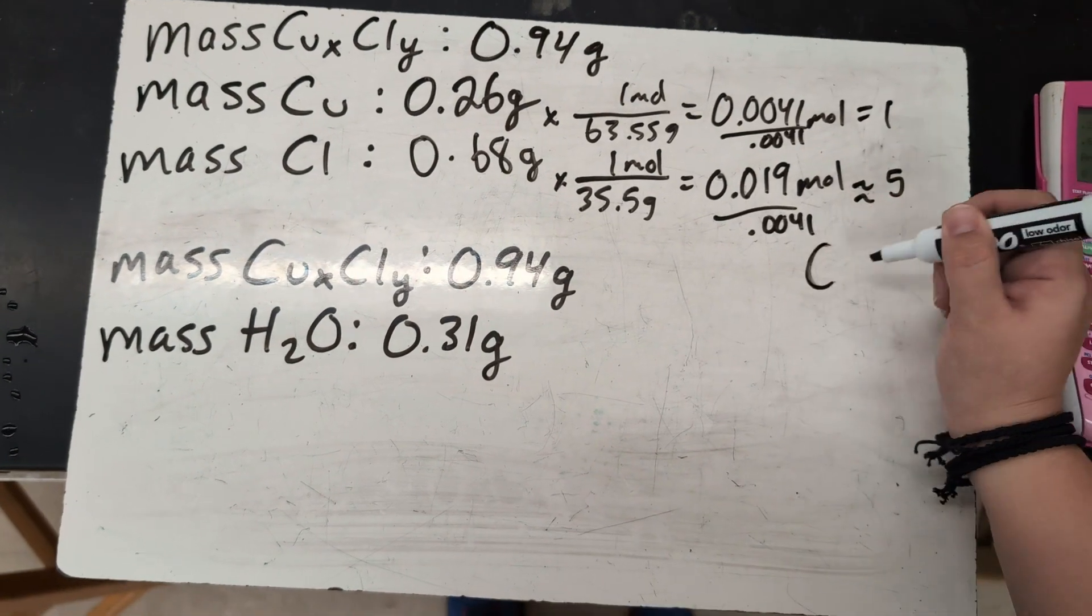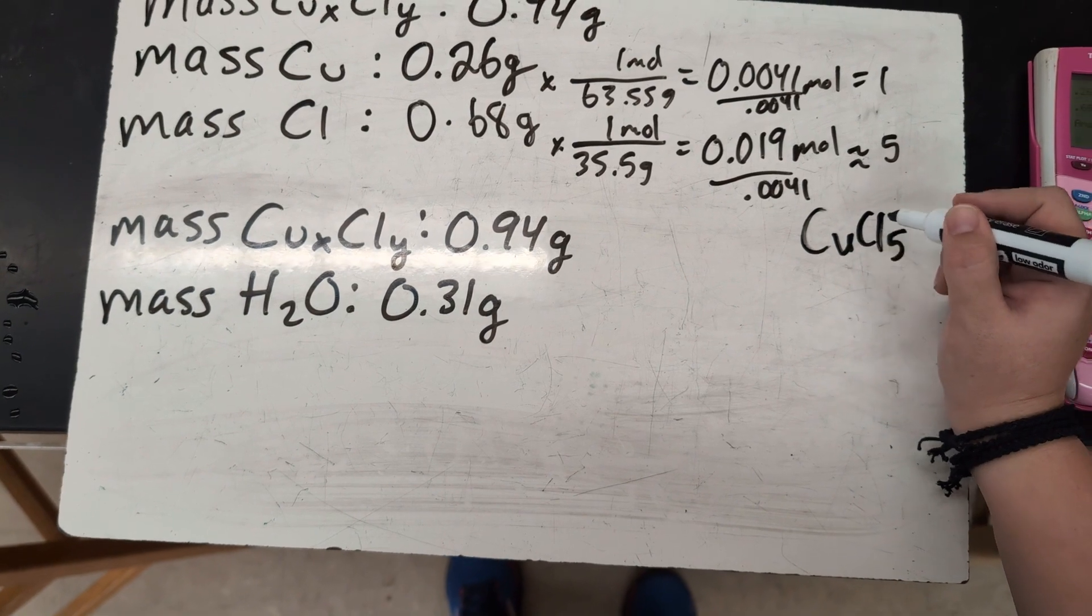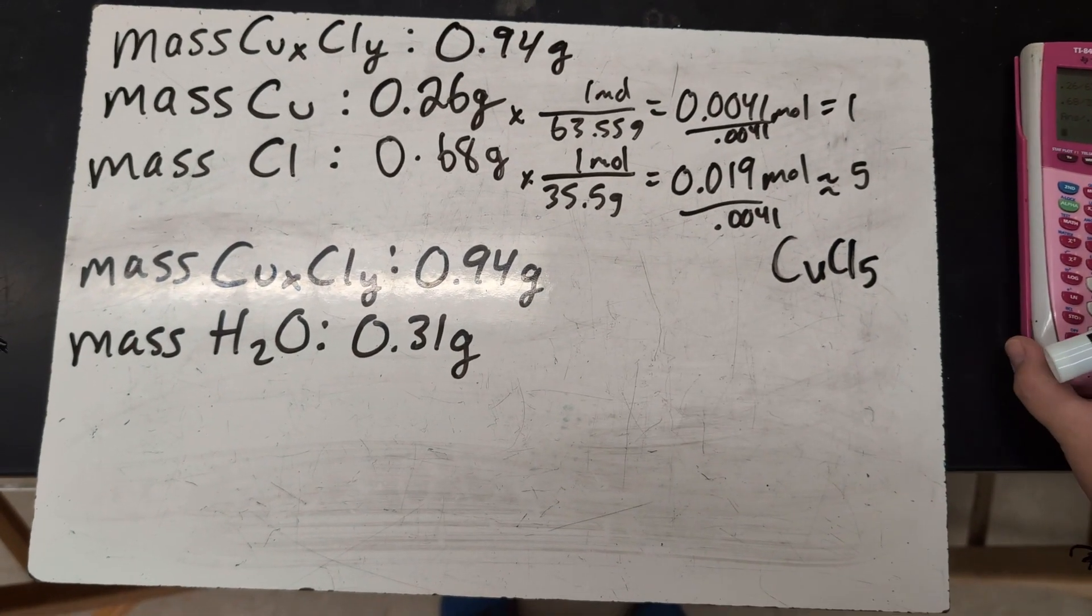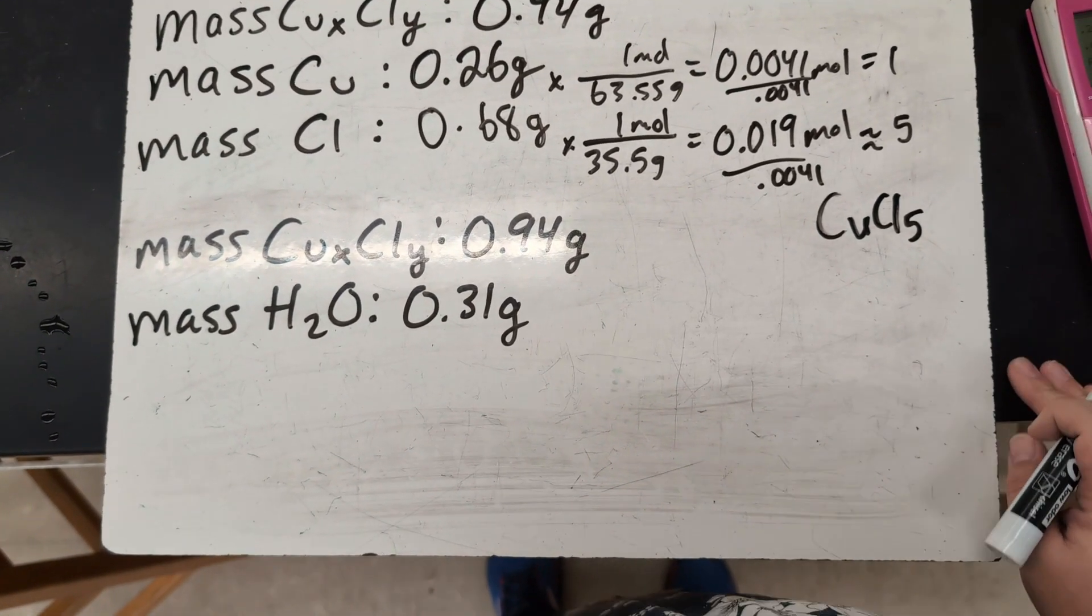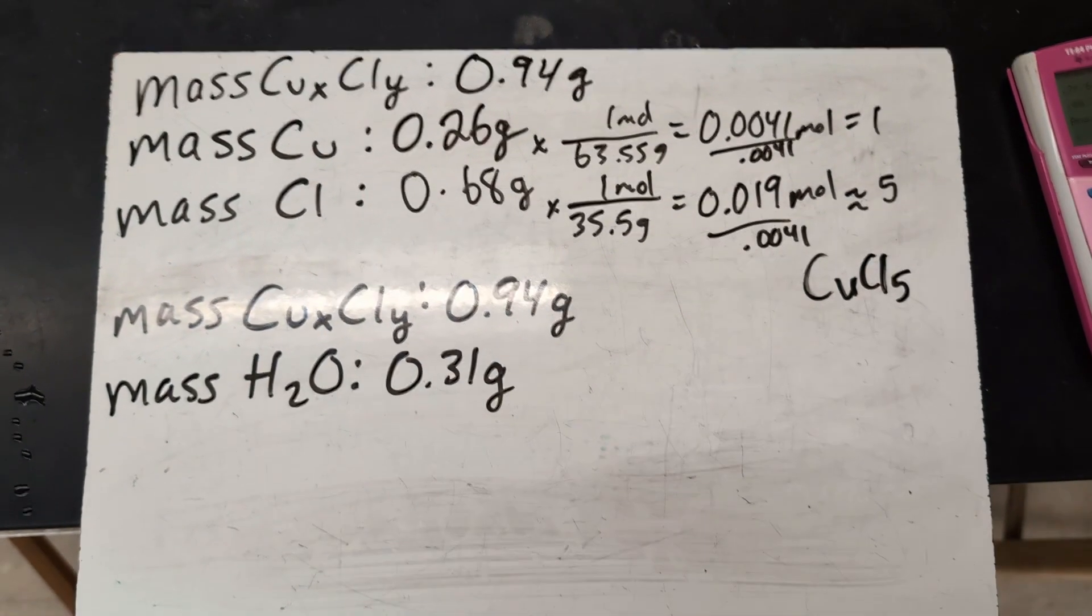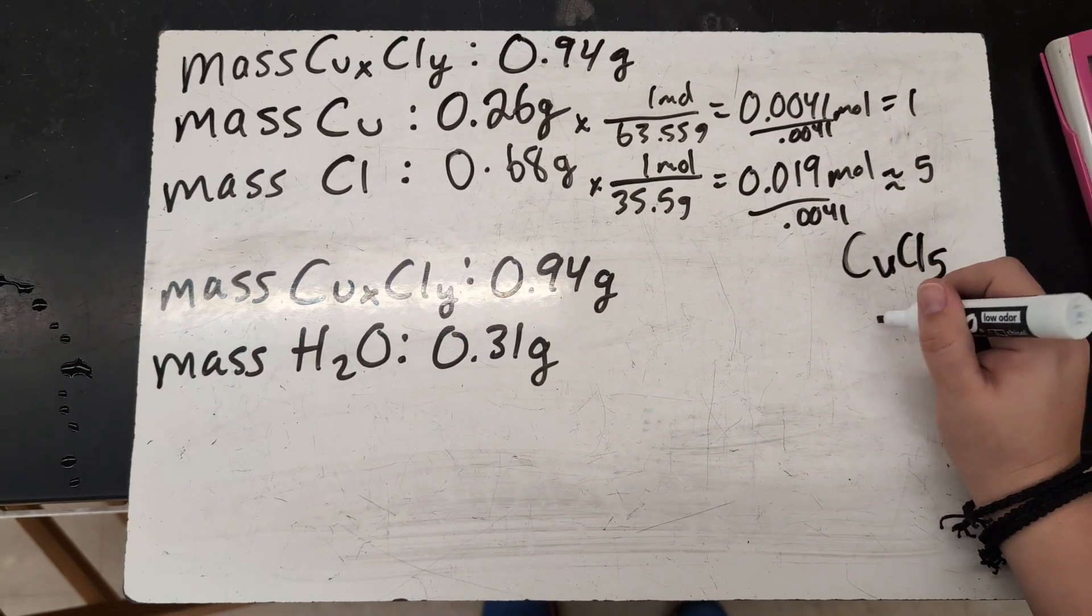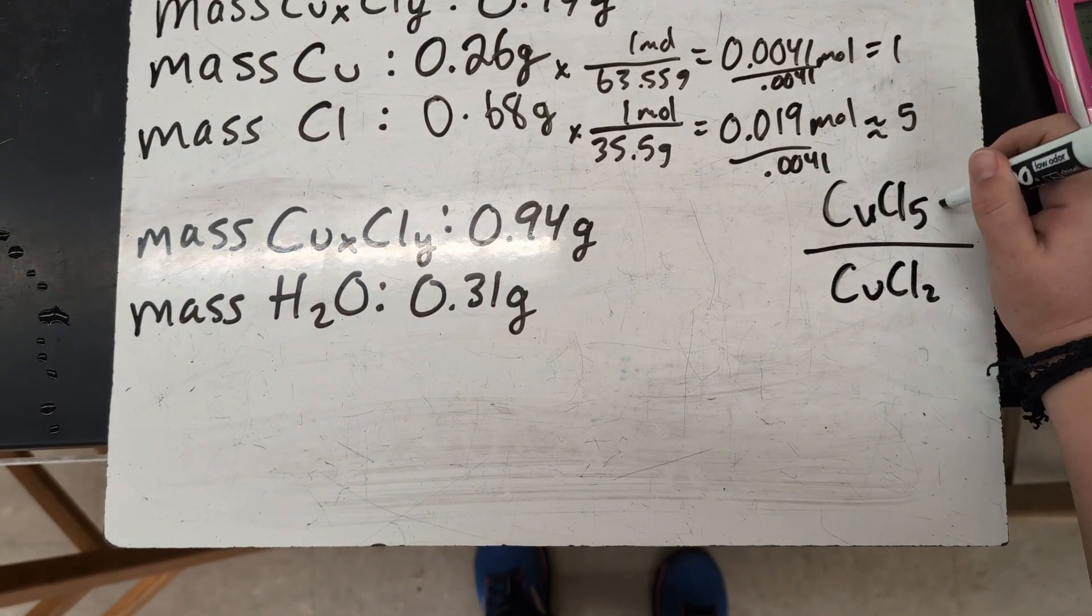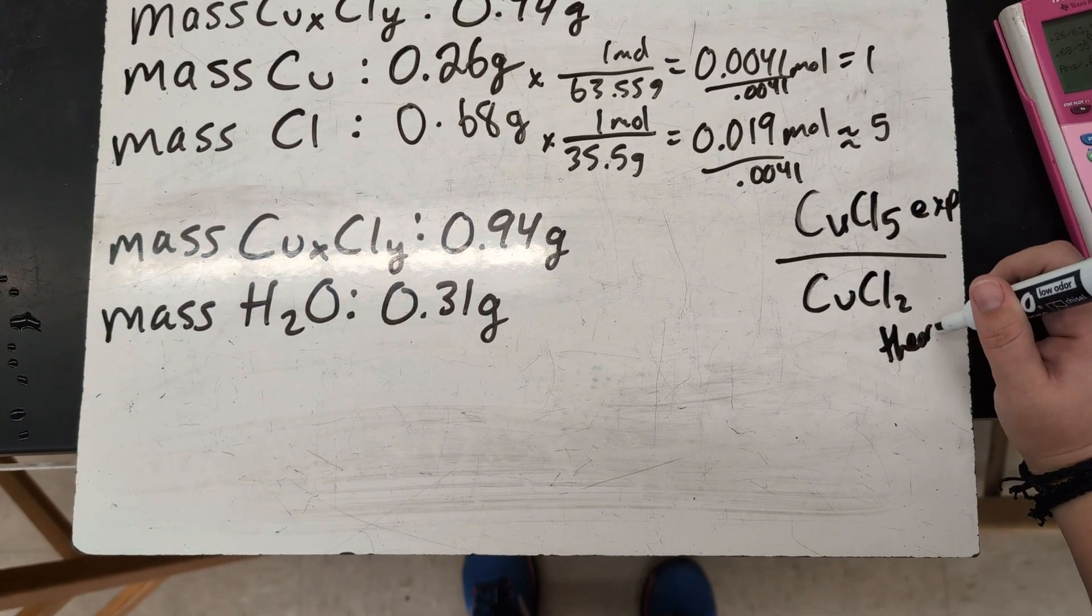So that one meaning your formula is CuCl5. That is not the true relationship there. Copper doesn't typically form plus five ions. And at this point, once the students have done their calculations, I'll usually give them the actual formula so they can see. So in this case, it was CuCl2, copper 2 chloride. So this was our experimental and this was the theoretical or the true value.